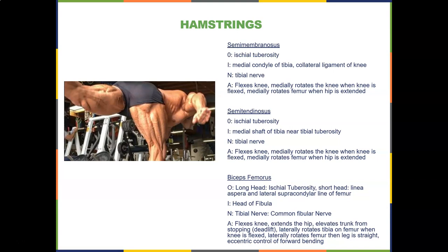The biceps femoris has a long head from the ischial tuberosity and a short head from the linea aspera and lateral supracondylar line of the femur. It inserts on the head of the fibula and is innervated by both the tibial nerve and common fibular nerve. It flexes the knee, extends the hip, elevates the trunk from stooping (like a deadlift), laterally rotates the tibia on the femur when the knee is extended, laterally rotates the femur when the leg is straight, and provides eccentric control of forward bending.